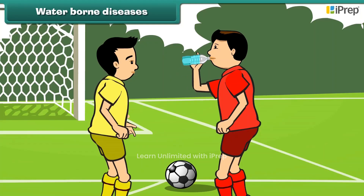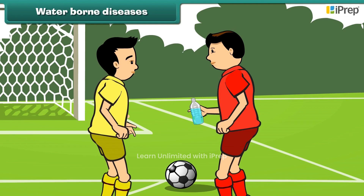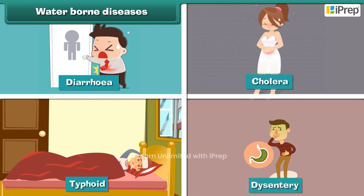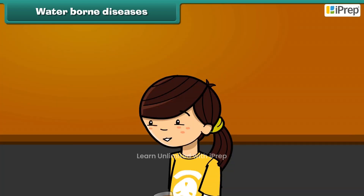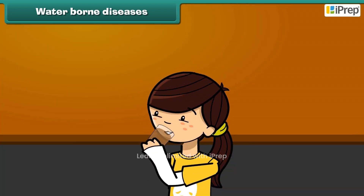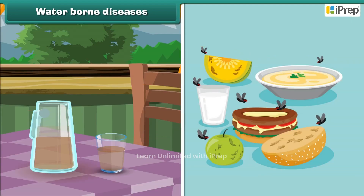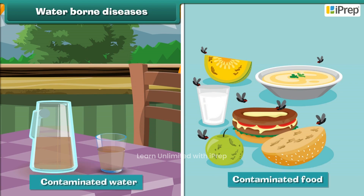Waterborne diseases like diarrhea, cholera, typhoid, and dysentery are caused by drinking contaminated or dirty water. These are communicable, as they spread through contaminated food or water.